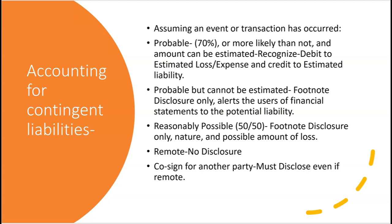Assuming the event or transaction has occurred, what's the likelihood it will result in losses? If it's probable that you're going to lose the lawsuit — meaning more likely than not — and the amount can be estimated, then you must recognize the loss. You'll debit an estimated loss and credit an estimated liability. The only way you journalize this is if it's probable, around 70% or more, and the amount can be estimated.